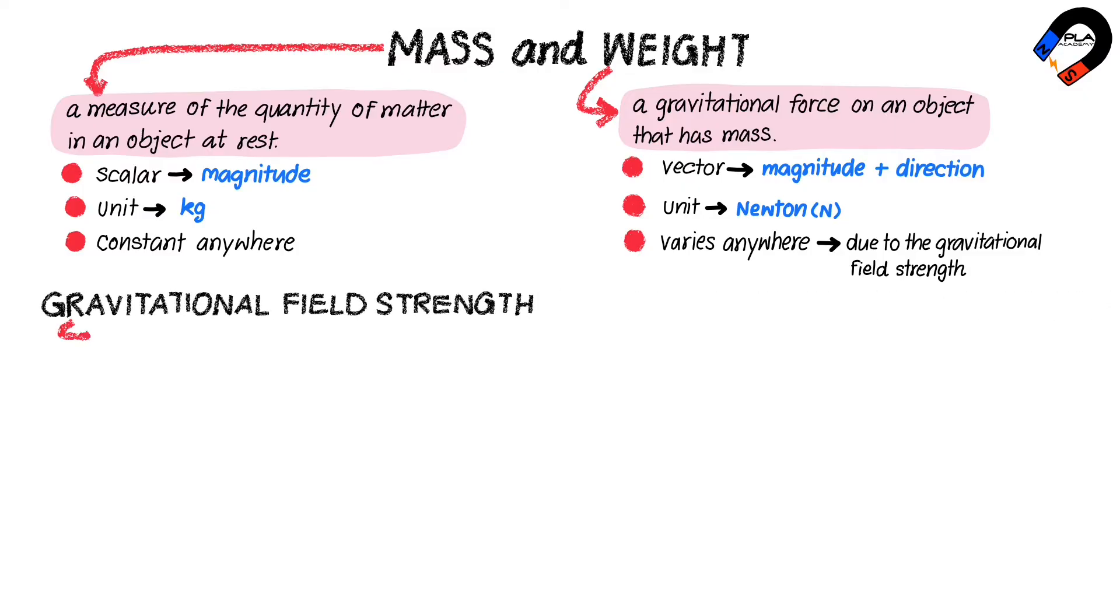Gravitational field strength is defined as force per unit mass. Therefore, the equation of gravitational field strength is g equals W divided by M, where g is the gravitational field strength in newtons per kilogram.